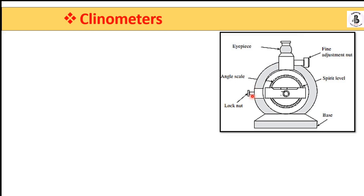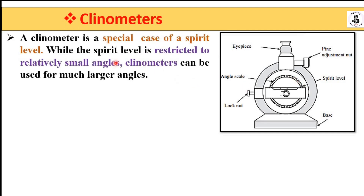When you set the clinometer onto the surface of the workpiece material, it will be unlocked. After getting the correct positioning, you can lock the key and take the readings. Readings are viewed through the eyepiece, and there is a fine adjustment facility. This is the basic construction of the clinometer.